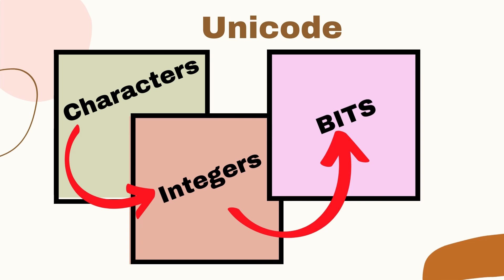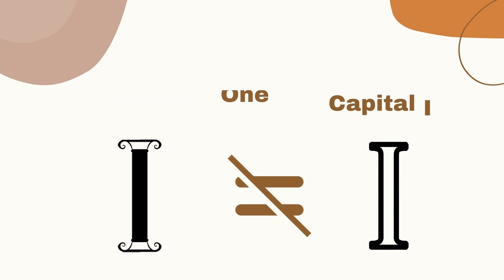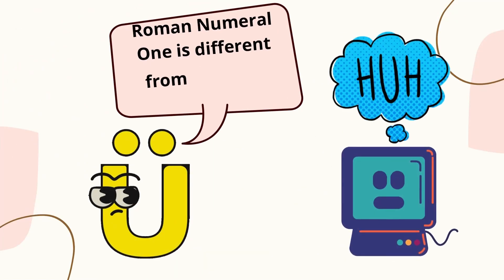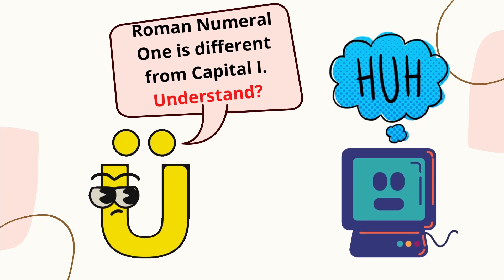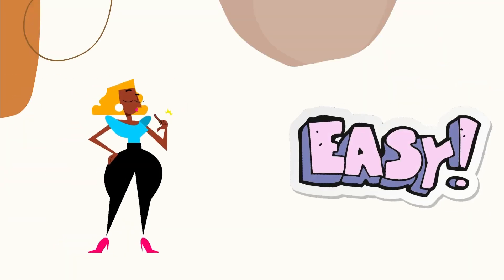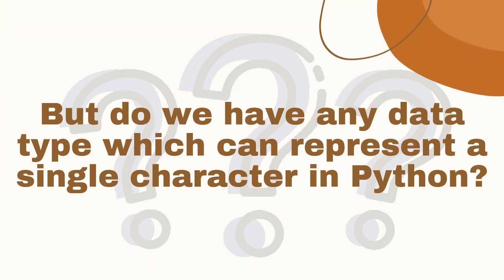At a high level, Unicode is a way of translating characters to integers and ultimately to bits. For example, there is a character for Roman numeral 1 that is separate from the uppercase letter I. They usually look the same but are two different characters with different meanings. Unicode helps the computer identify that these symbols are different characters by assigning them unique codes.